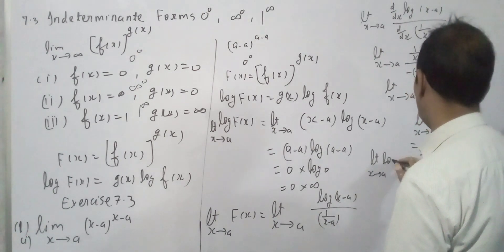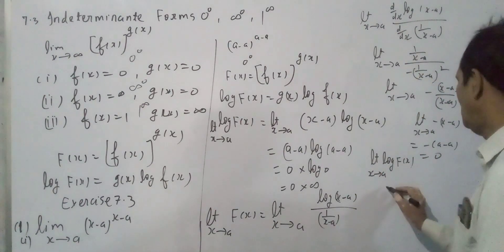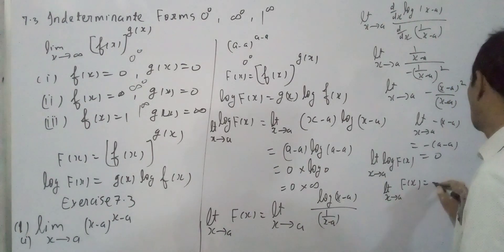So limit x tends to a, log f(x). So the limit of f(x) is e^0 = 1, as x tends to a.